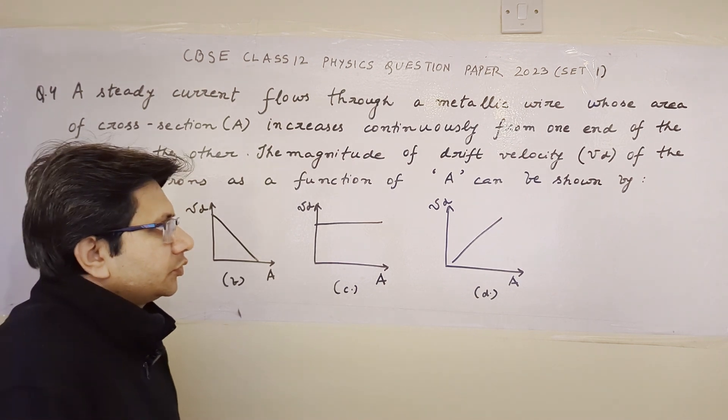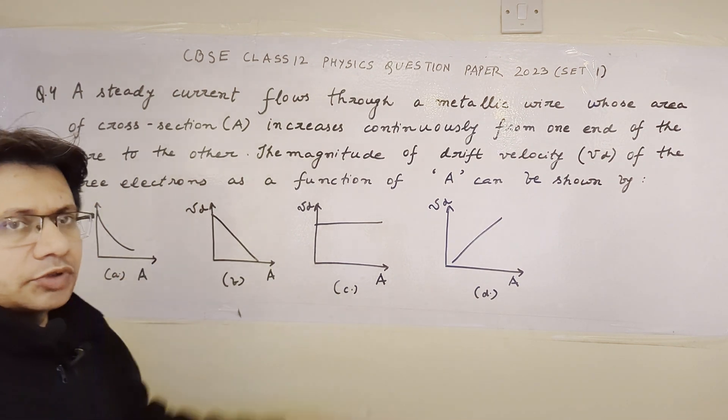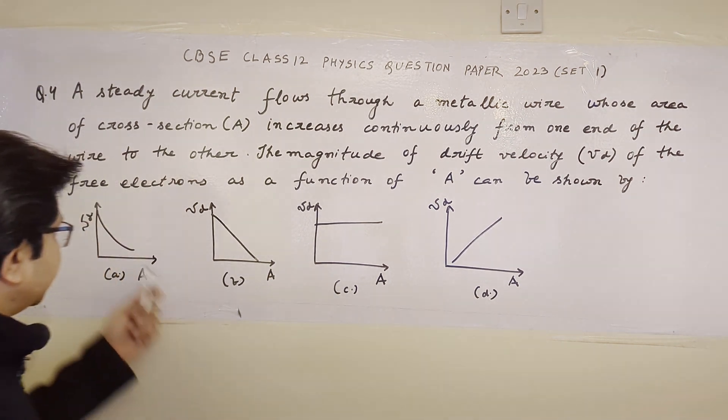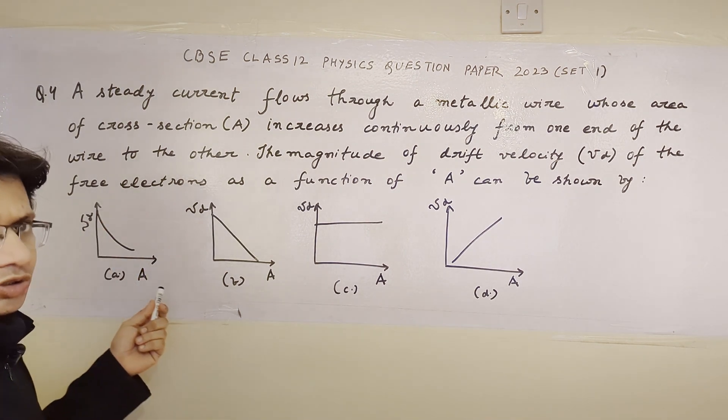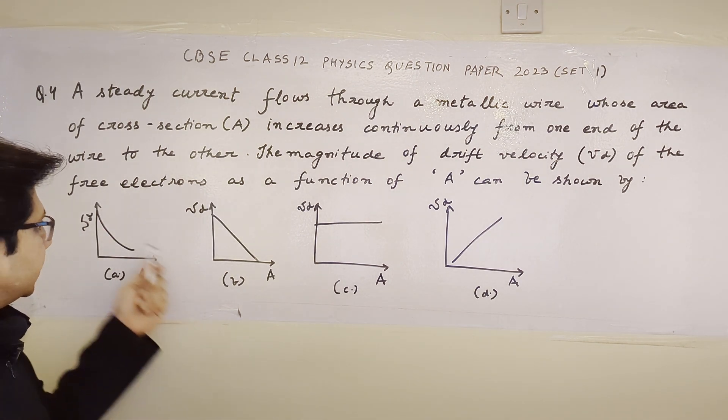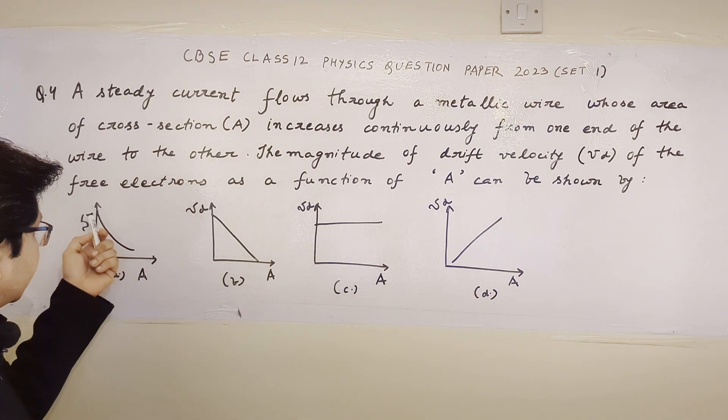This particular graph shows that when the area increases, the drift velocity decreases. This shows in a nonlinear manner. In this particular graph, the drift velocity changes with the area of cross-section in a nonlinear manner and it decreases.